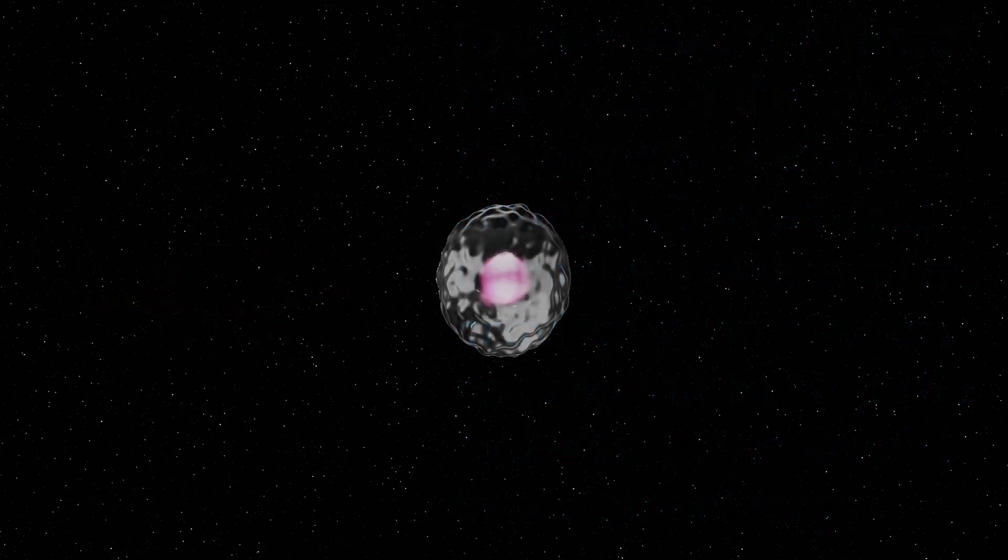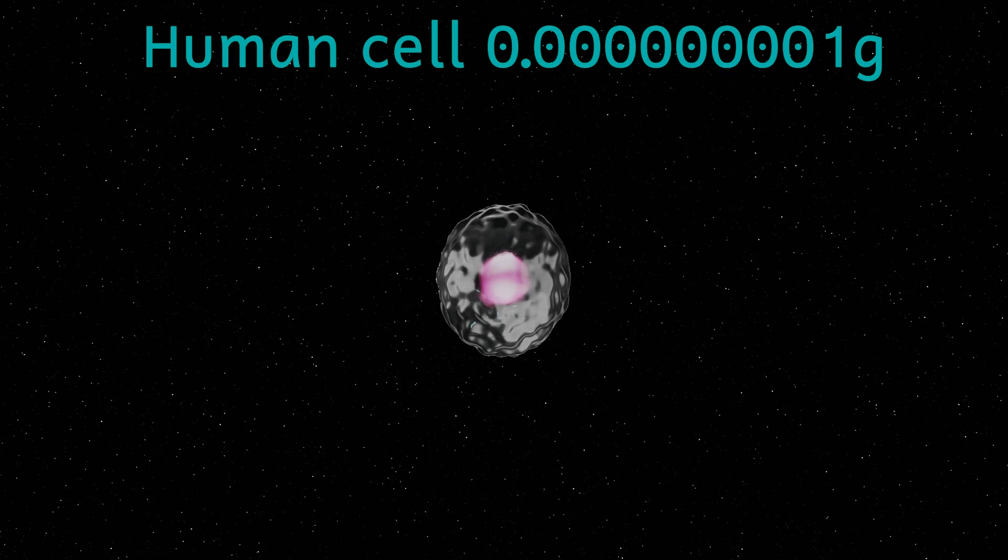What about one of my cells? The average human cell has a mass of about one nanogram. That's this much. This means that the Schwarzschild radius for one of my cells will be 1.485 times 10 to the minus 39 of a metre.